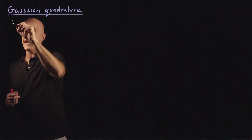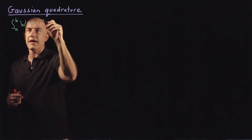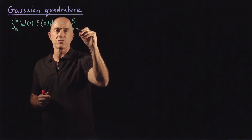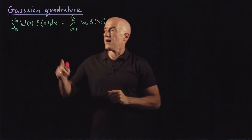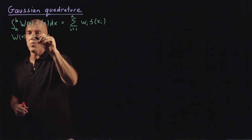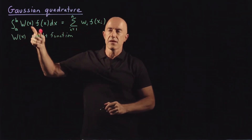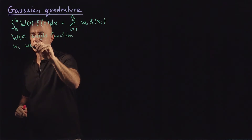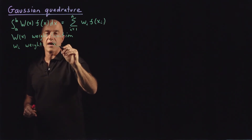Gaussian quadrature tackles an integral of the form from A to B of capital W(x) f(x) dx, and writes it as an n-point summation: the sum from i equals 1 to n of little w_i times f(x_i). Capital W(x) is called the weight function. There's a different type of Gaussian quadrature depending on the form of this function W. The little w_i's are called the weights, and the little x_i's that f is evaluated on are called the nodes.